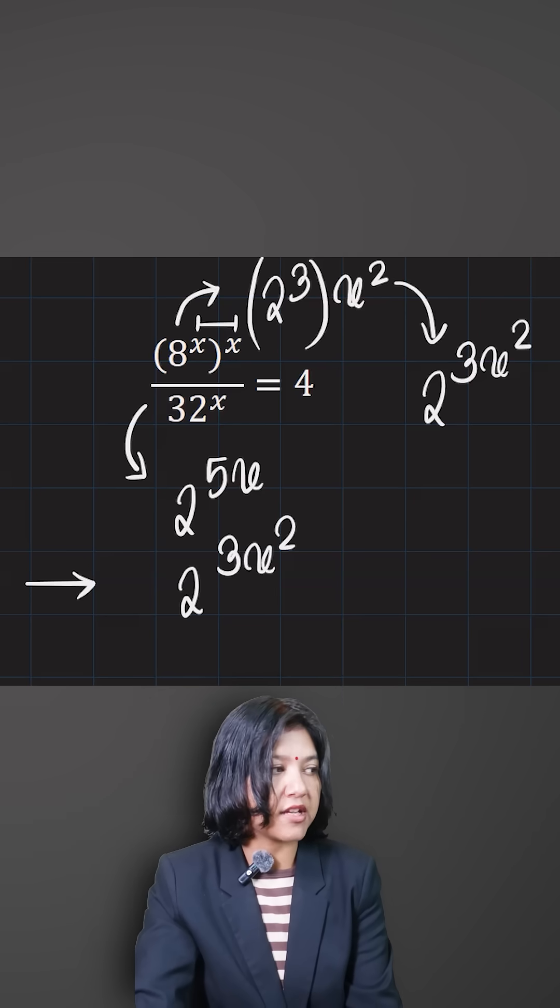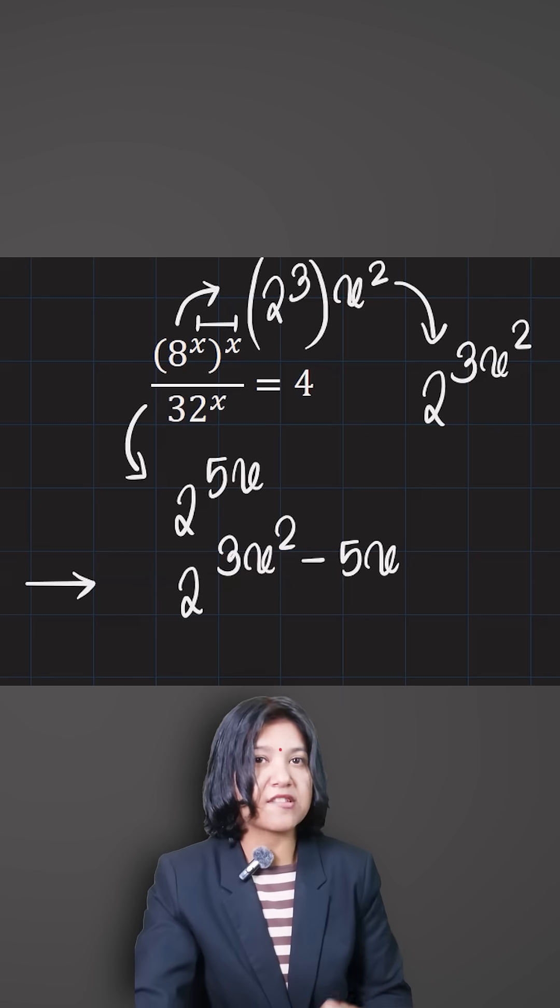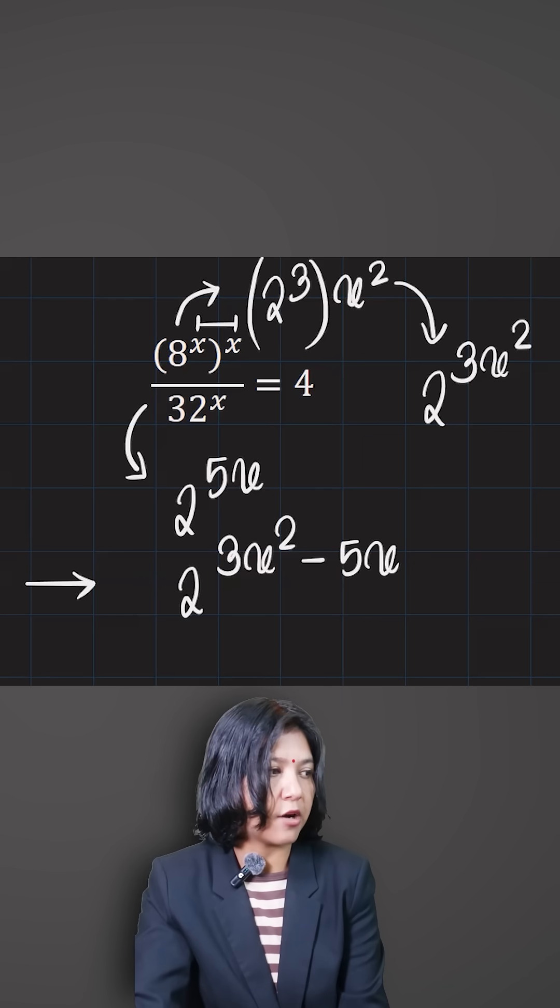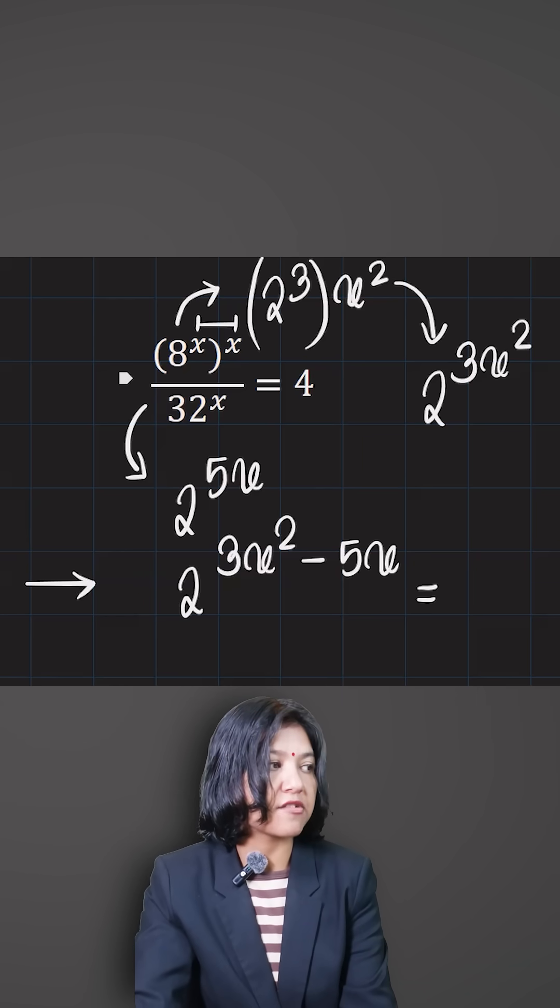So the top power is 3x squared. The second power at the bottom is 5x. Because they were dividing, I've subtracted the power. On the right side, 4 can be expressed as 2 squared.